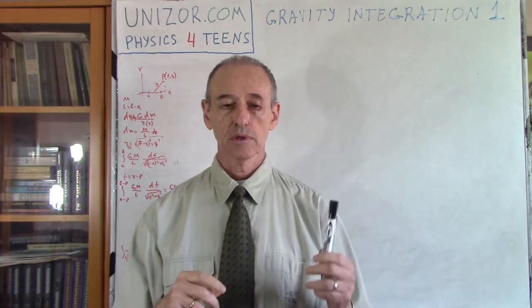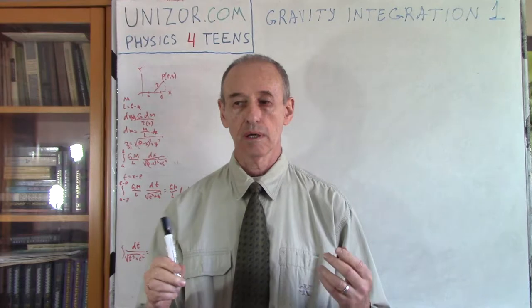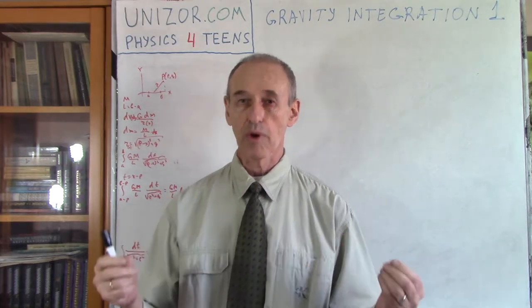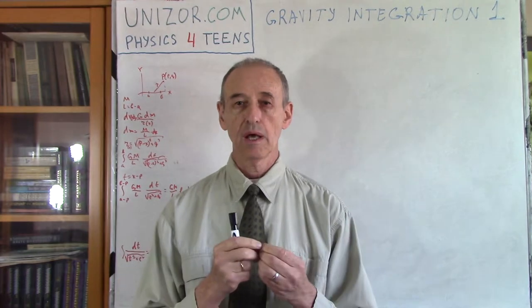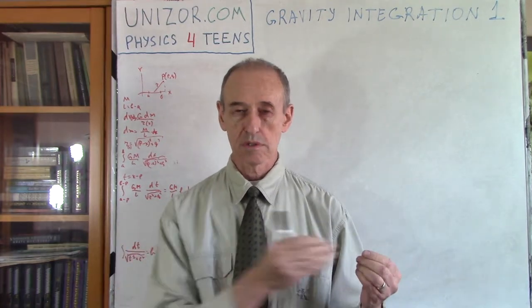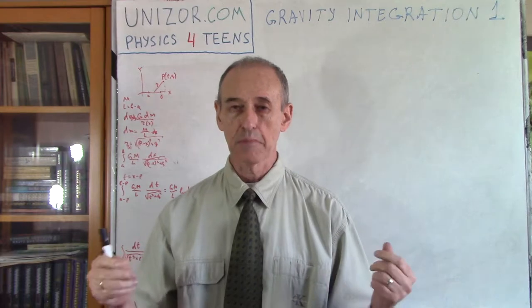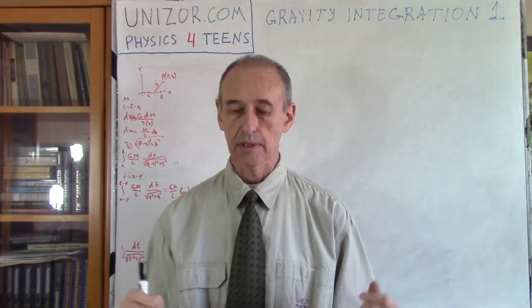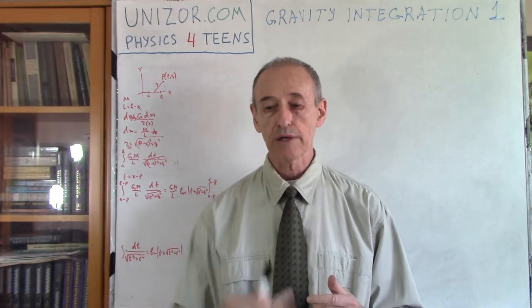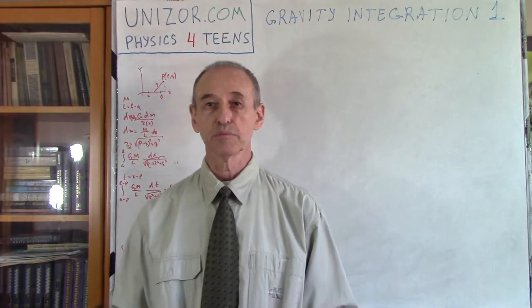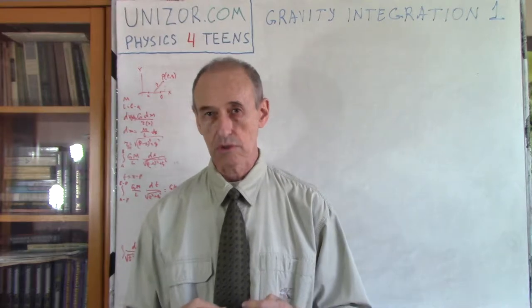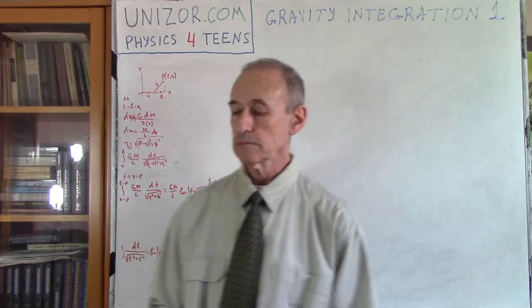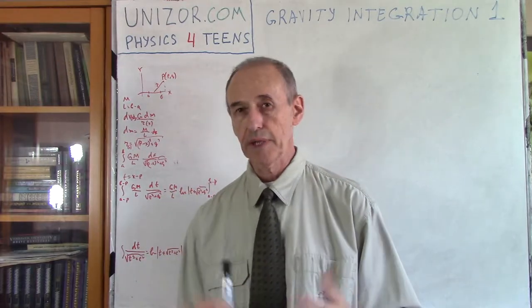Today I would like to consider, instead of point masses, a little bit more complicated object: a thin rod which has mass distributed along its length. I would like to basically calculate what is the gravitational potential at any point around this rod. That's the plan for today.